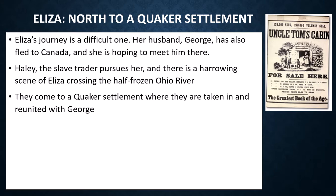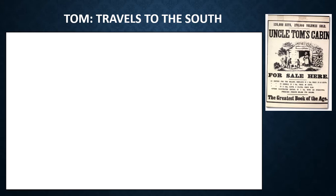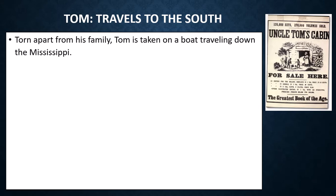Look for the contrast between the Shelby household and the Quaker settlement. Tom's loyalty is shown by Stowe as a virtue, but also a detriment. While Eliza is also a Christian, her courage in leaving — even though that's illegal — is the right Christian thing to do to save her family. In the meantime, Tom is traveling south. He's been ripped from his family and is on a boat down the Mississippi. Because Eliza ran away, Haley will not let Tom out of his sight.